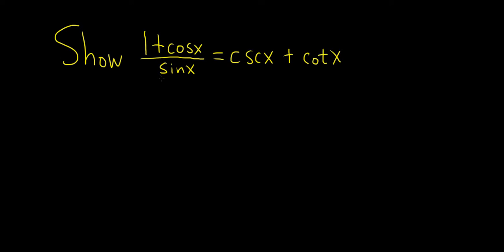In this problem we have to show that 1 plus cosine x over sine x is equal to cosecant x plus cotangent x. Let's go ahead and work through this solution.